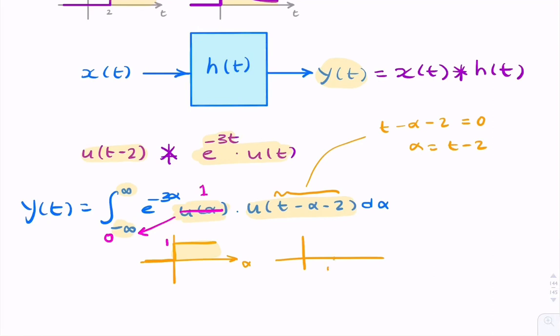So at t minus 2, that's where your step function starts, or ends in this case, because it's a reflected or a reversed step. So we have a step function that does that.